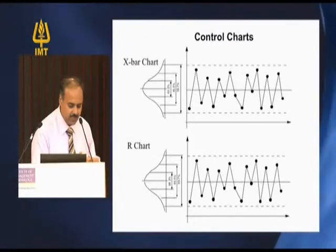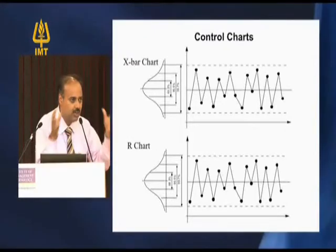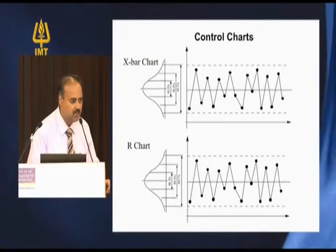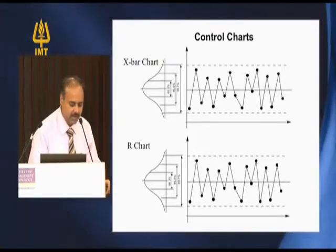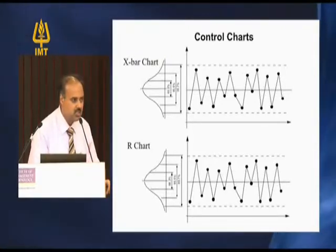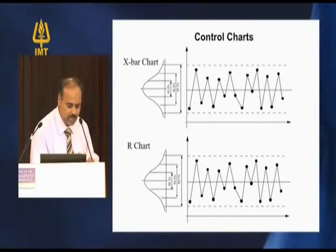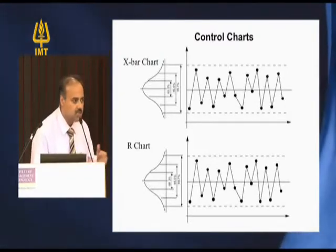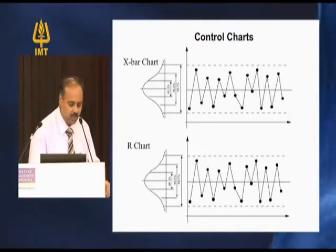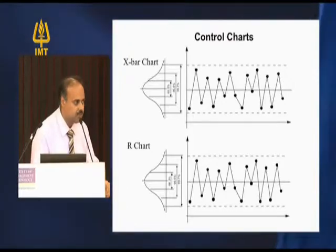If you are practicing plus or minus one sigma, you will get 68.39% of the sample. If you are practicing plus or minus two sigma, you get 95.5% of the sample. If you are practicing plus or minus three sigma, you get 99.7% of all products and services falling within the mean.